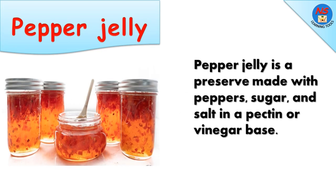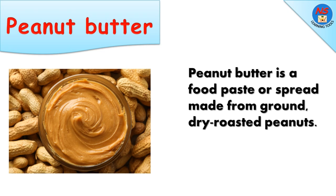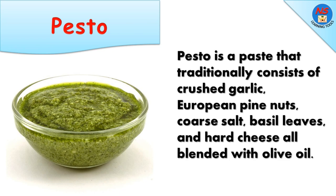Pepper jelly is a preserve made with peppers, sugar, and salt in a pectin or vinegar base. Peanut butter is a food paste or spread made from ground dry-roasted peanuts. Pesto is a paste that traditionally consists of crushed garlic, European pine nuts, coarse salt, basil leaves, and hard cheese, all blended with olive oil.